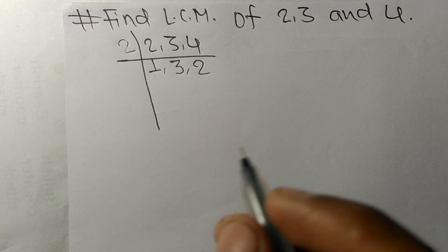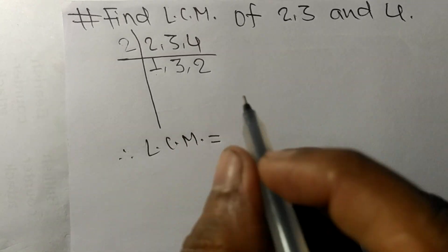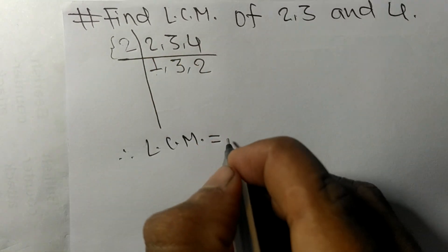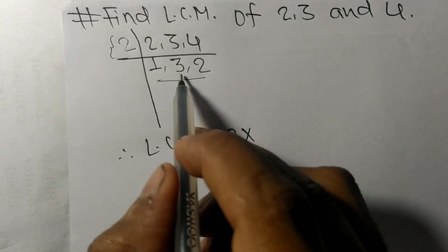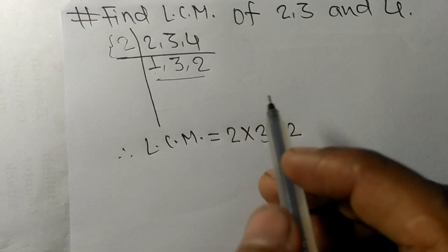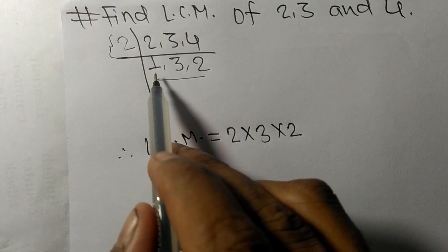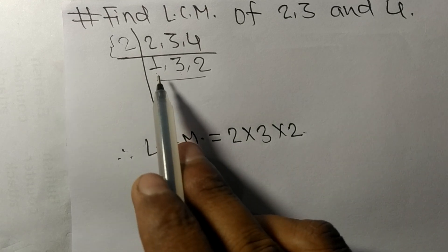Therefore, LCM is equal to—from this side it is 2, from here we take 3 and 2. We neglect 1 because multiplying any number with 1 gives the same result.